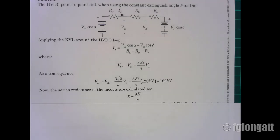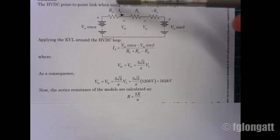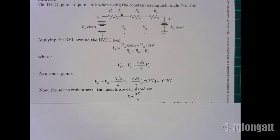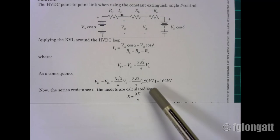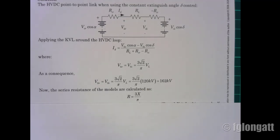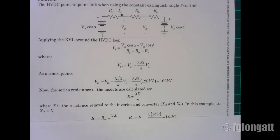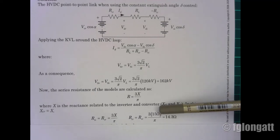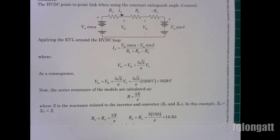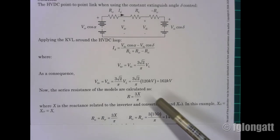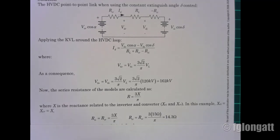The next step is calculating the equivalent resistance included in the model, which represents the commutation effect and is related to the reactance of the inverter and rectifier. Since both the rectifier and inverter use an inductive reactance of 15 ohms, when combined, both resistors yield an equivalent resistance of 14.3 ohms.